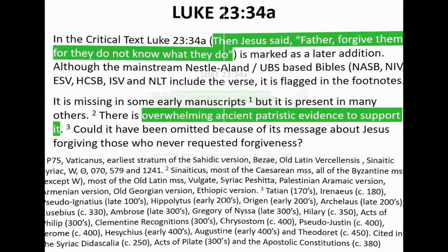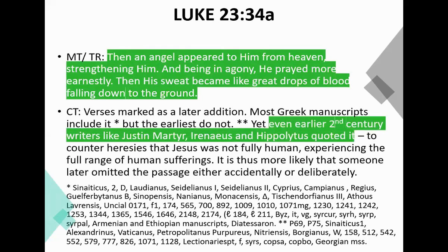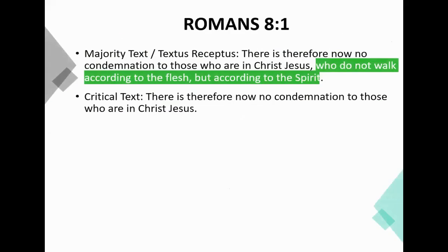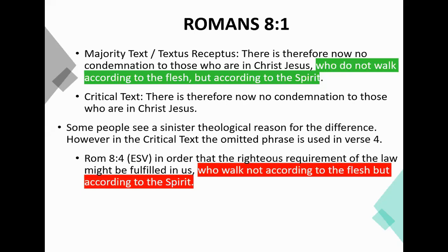When it talks about Jesus sweating great drops of blood falling to the ground in Luke 22:43-44, it's not in a lot of the Alexandrian texts, and it will be left out or footnoted in some modern Bibles. But again, we have early second century writers like Justin Martyr, Irenaeus, and Hippolytus quoting it. Romans 8:1 — the phrase 'who do not walk according to the flesh, but according to the spirit' — you'll see it in the King James but not in the newer ones. That's not as significant because that exact phrase is used later on in the chapter, so in the King James you have it twice and in the modern ones only once.